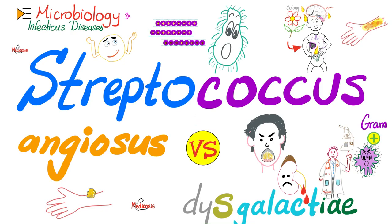What is going on, guys? It's Medicosis Perfectionitis, where medicine makes perfect sense. Let's resume our playlist called Microbiology and Infectious Diseases. In the previous video, we talked about Streptococcus pyogenes. Today, I'll introduce you to two new bacteria: Streptococcus angiosus versus Streptococcus dysgalactiae. Let's get started.